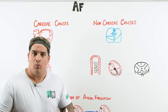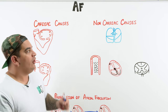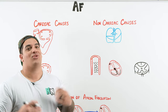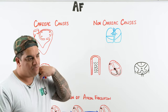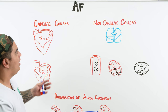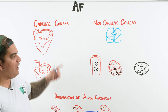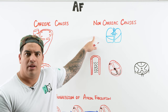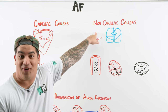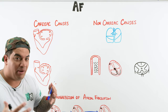Atrial fibrillation is a type of arrhythmia — a very specific one we have to discuss because it's so common and has a lot of different problems associated with it. It's a supraventricular tachycardia, meaning it originates in the atria. I want you to think about two particular etiological problems: it's due to either a cardiac problem or a non-cardiac problem.